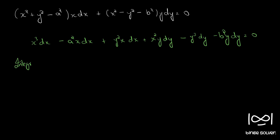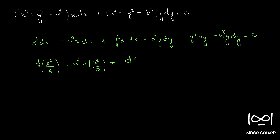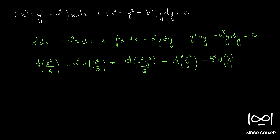Before integration, note that x³ dx = d(x⁴/4), and a²x dx = a²·d(x²/2). The term y²x dx + x²y dy can be written as d(x²y²/2). Similarly, −y³ dy = −d(y⁴/4) and −b²y dy = −b²·d(y²/2). So this equals d(constant).